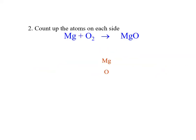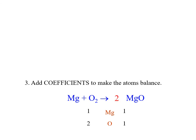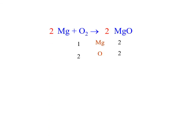Now to balance it, we count atoms on each side. One magnesium on the left, one on the right — OK. Two oxygens on the left but only one on the right, so we put a coefficient of 2 in front of MgO. That gives two oxygens on the right but also two magnesiums on the right, so we put a 2 in front of Mg on the left as well. Now we have two magnesiums and two oxygens on each side — balanced chemical equation.